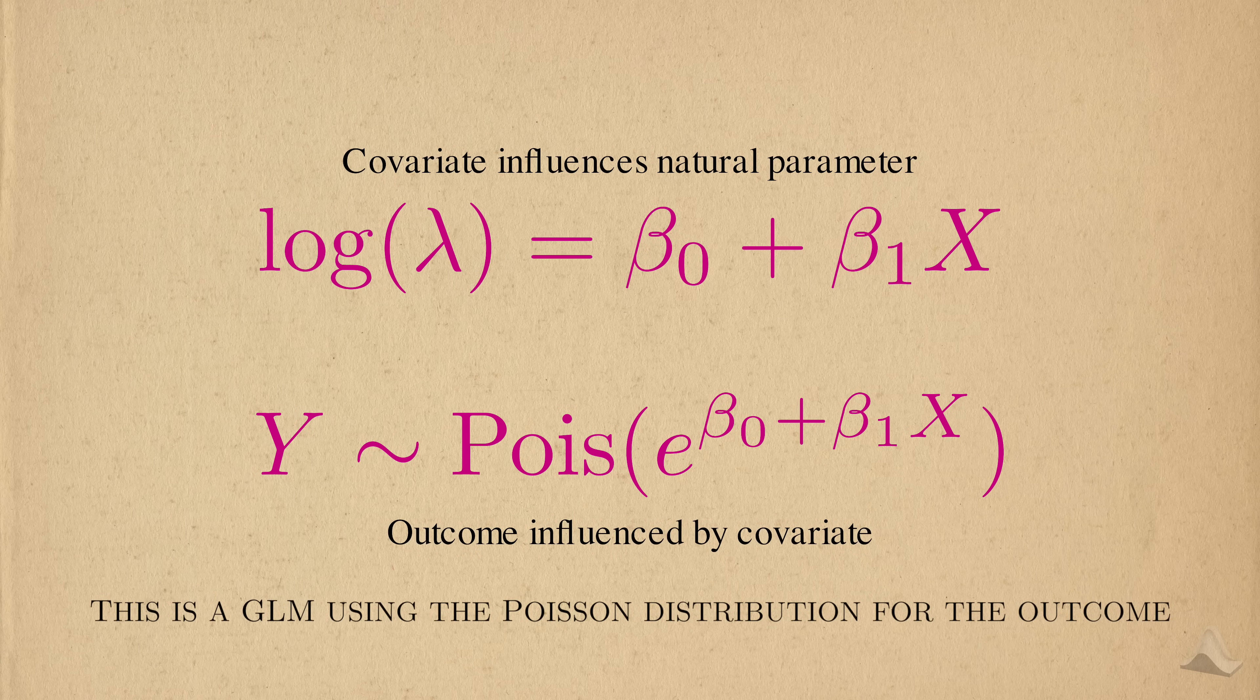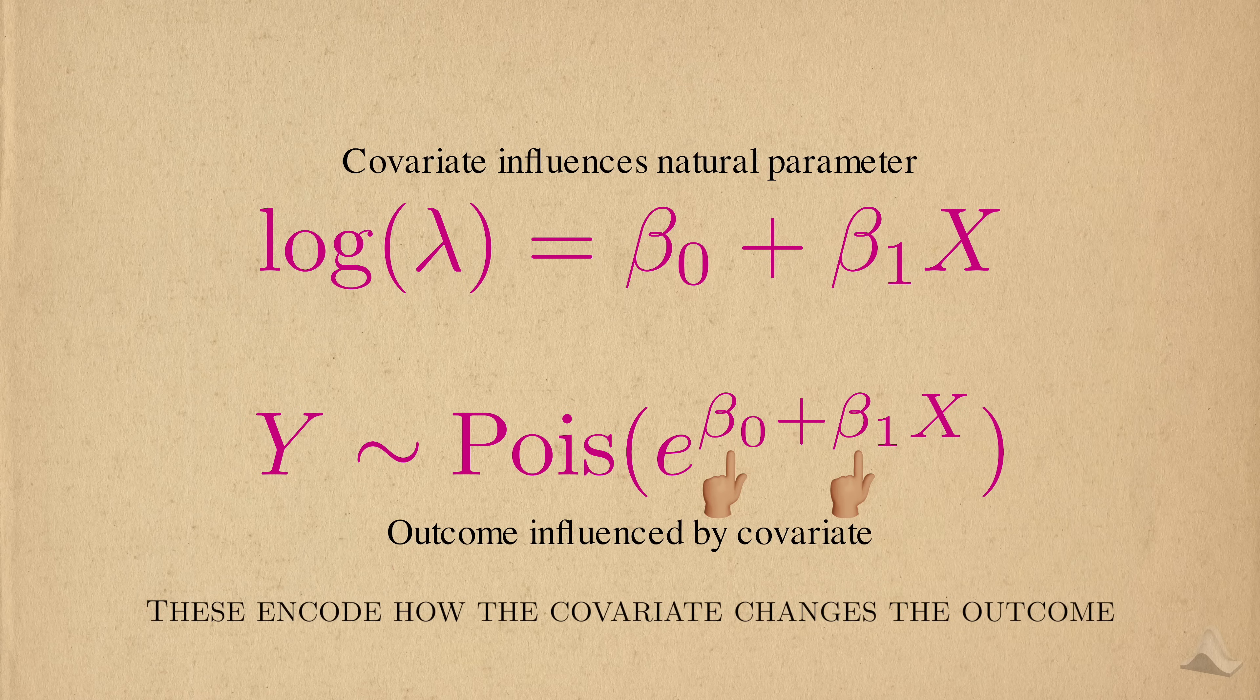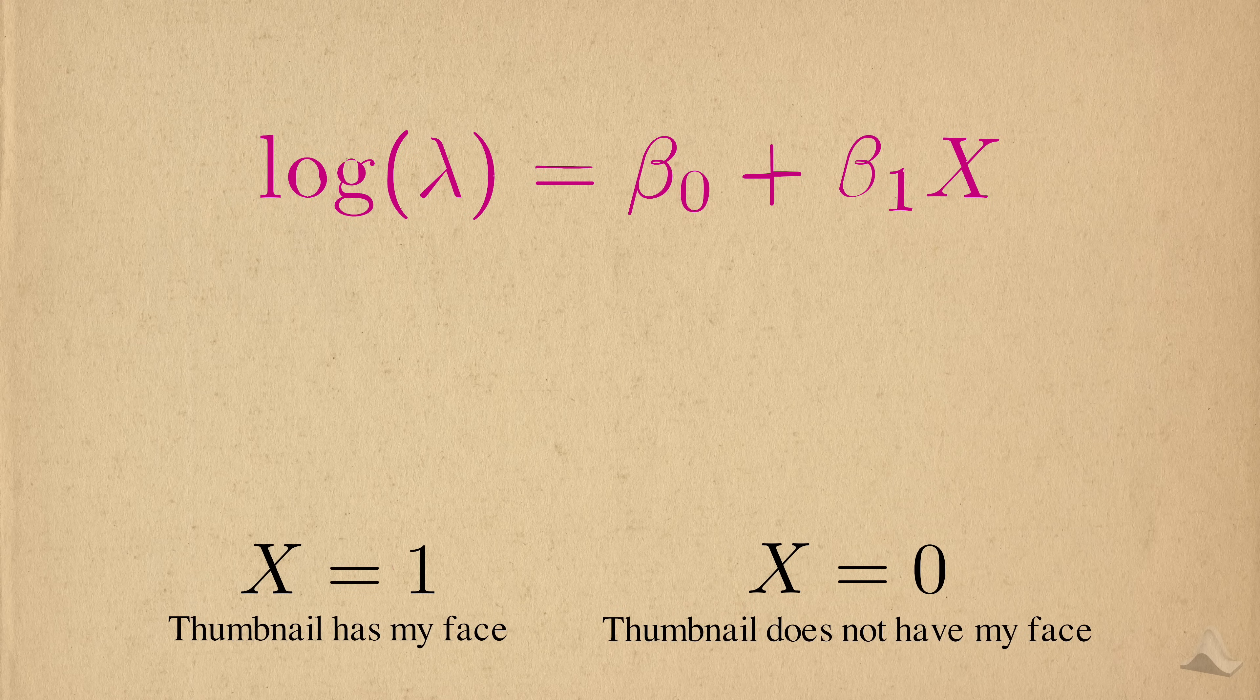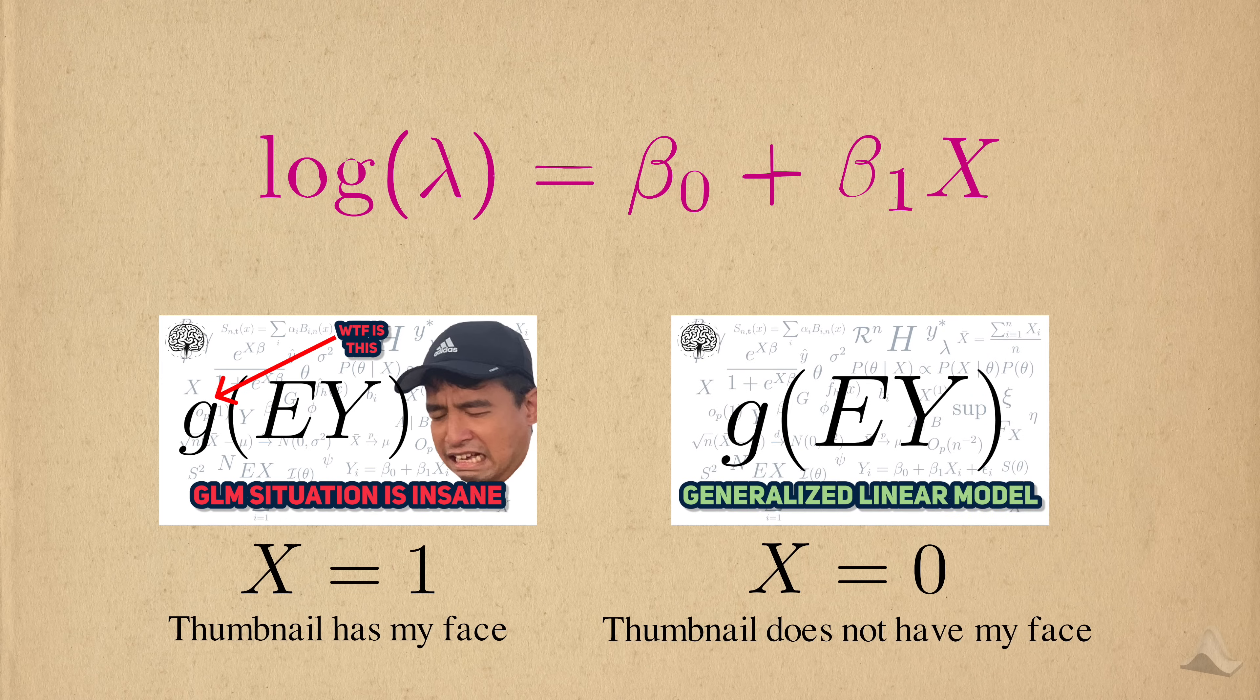Based on this link, you can deduce that the covariates will influence the outcome through the log rate. Thus, the full model is that the outcome is a Poisson random variable with the following rate parameter. All these together form a GLM using the Poisson distribution as the outcome distribution. Instead of a single lambda parameter, we have two regression parameters. These represent how the covariates influence the outcome, so a natural question is to ask, how do we interpret them? To answer that, we need to look at the relationship between the natural parameter, log lambda, and the linear predictor. For simplicity, we'll assume that we have a binary covariate indicating whether or not a video thumbnail has my face on it. 1 means my face is on the thumbnail, and 0 means it doesn't. Some of you asked for non-biostatistics examples, so this is what you get.